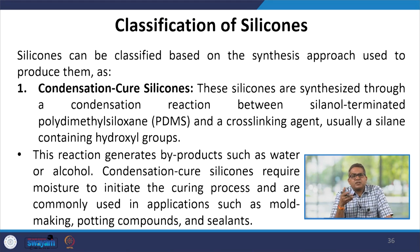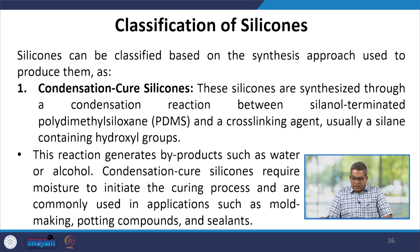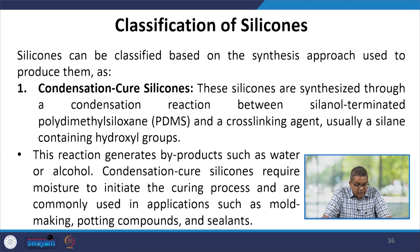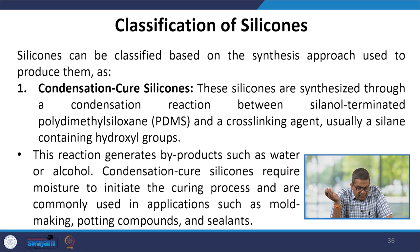Silicones can be classified based on the synthesis approach used to produce them. Condensation cure silicones are synthesized through a condensation reaction between silanol-terminated polydimethylsiloxane (PDMS) and a cross-linking agent, usually a silane containing hydroxyl groups. This reaction generates byproducts such as water or alcohol. Condensation cure silicones require moisture to initiate the curing process and are commonly used in mold making, potting compounds and sealants.